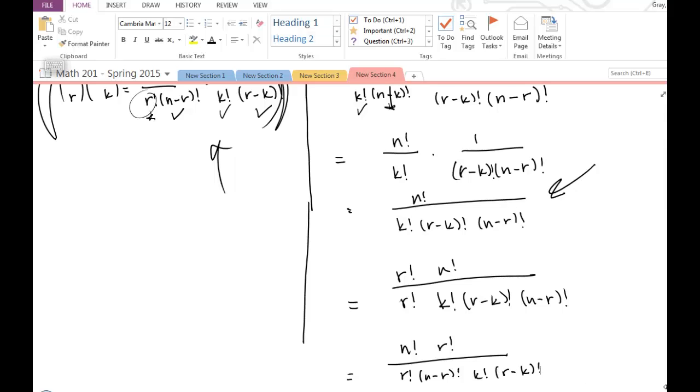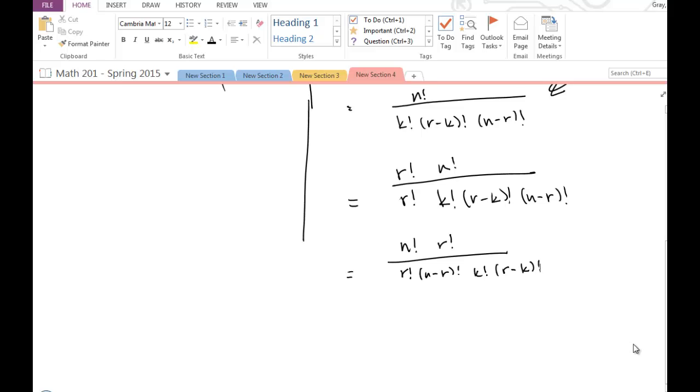And now we're almost there, right? I can just separate these into two rational expressions that are being multiplied.